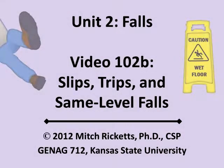This has been a brief overview of causes and preventive measures for same-level falls in workplaces. More information is available on the websites of safety and health organizations such as the Occupational Safety and Health Administration, the National Institute for Occupational Safety and Health, Great Britain's Health and Safety Executive, the Canadian Centre of Occupational Health and Safety, and Safe Work Australia.